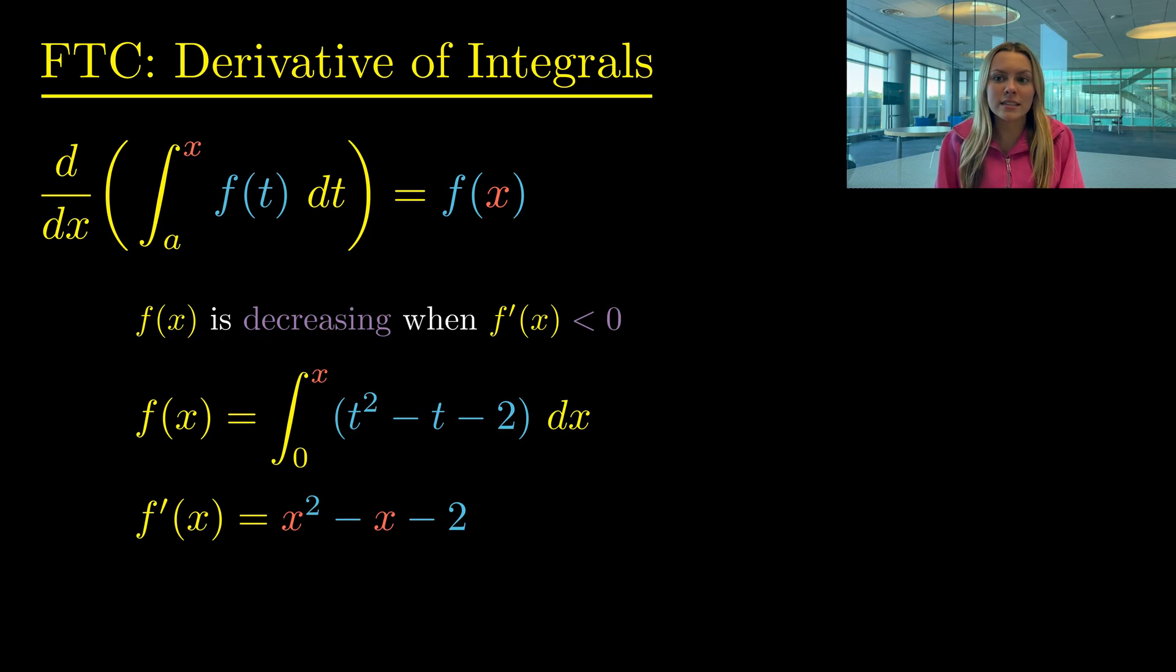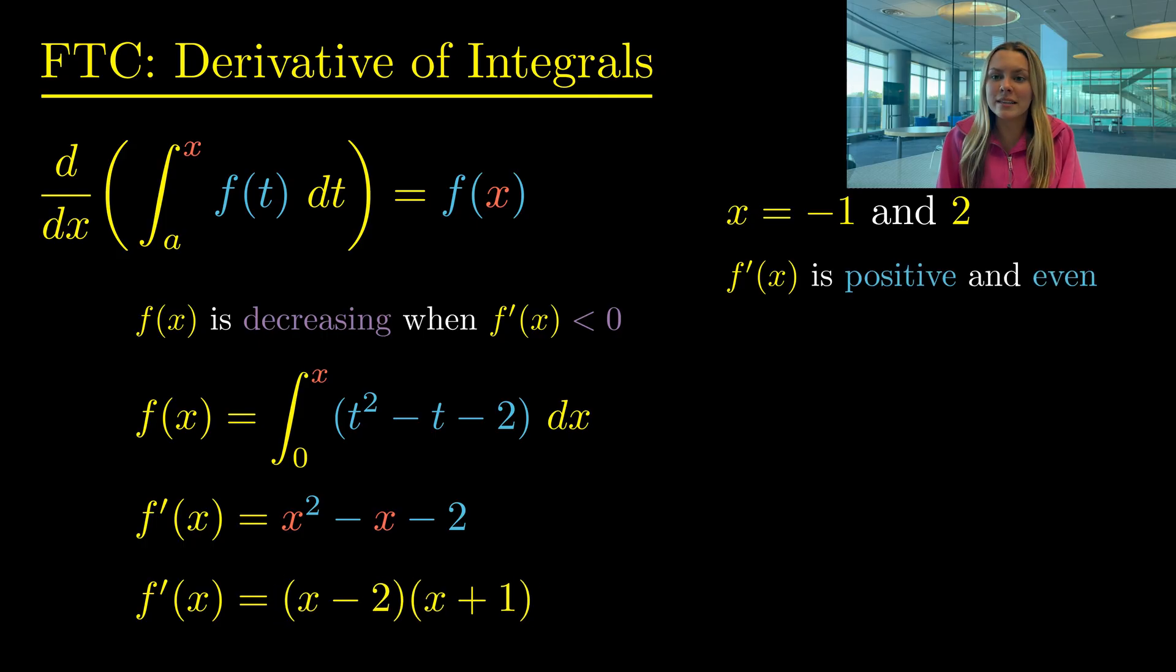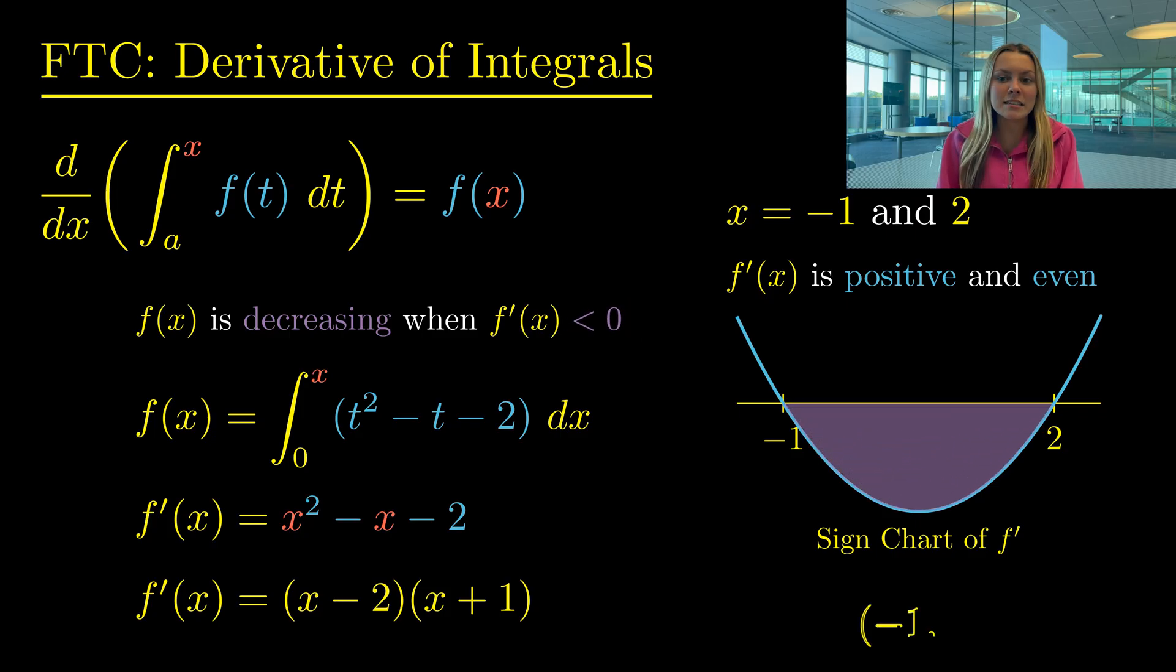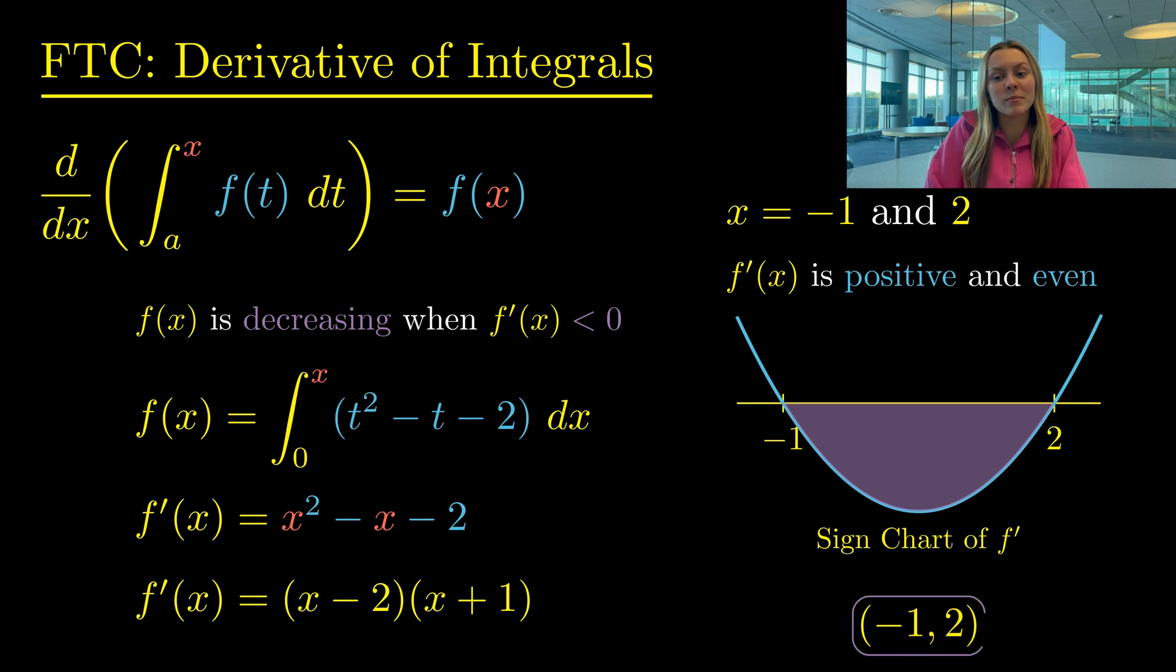Now we should factor this derivative, since we want to see where it is negative, and we get f' is (x minus 2)(x plus 1). The zeros of f' are thus negative 1 and 2. f' is also positive and has 2 factors, so it is even. So f' will be a parabola that goes through the points negative 1 and 2. Since f is decreasing when f' is negative, we want to focus on where our sign chart of f' is below the x-axis. And it looks like our answer will be from negative 1 to 2.